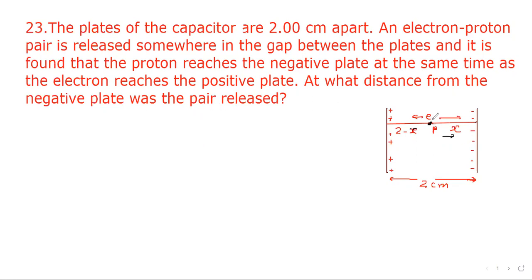Suppose this is the position from where the pair is released. Electron moves in this direction and proton moves in this direction. This distance is x. Since separation is 2 cm, this distance will be 2 minus x.